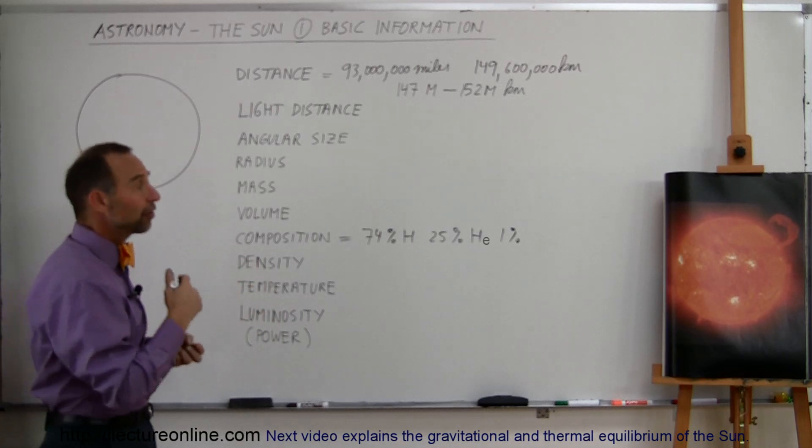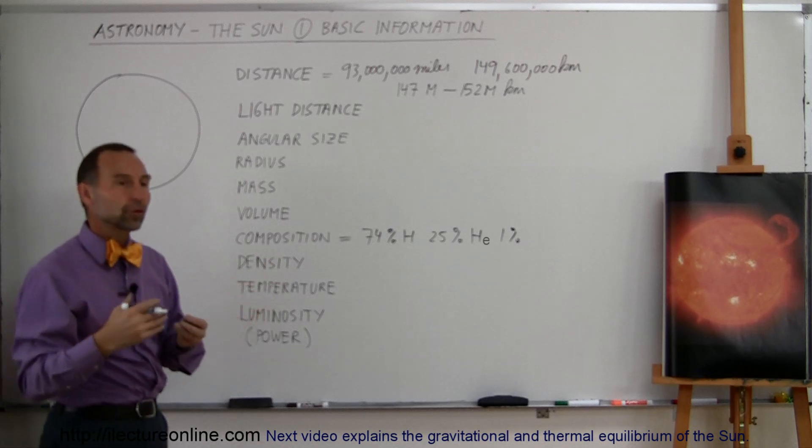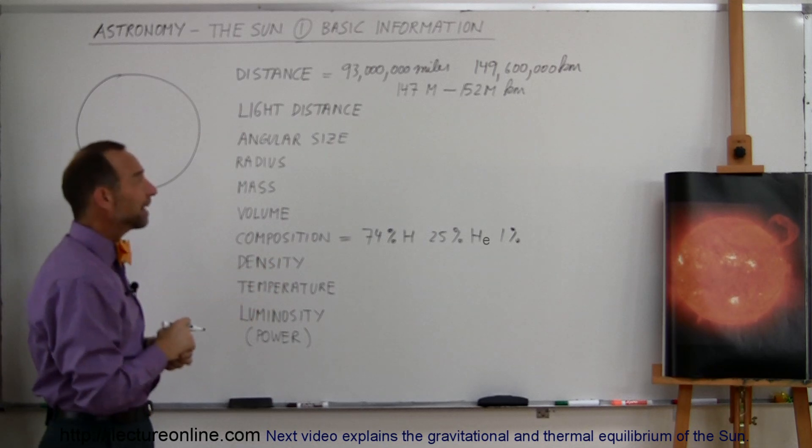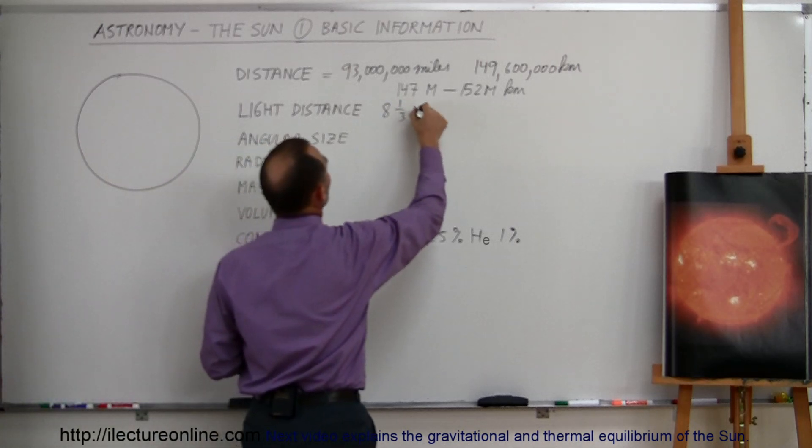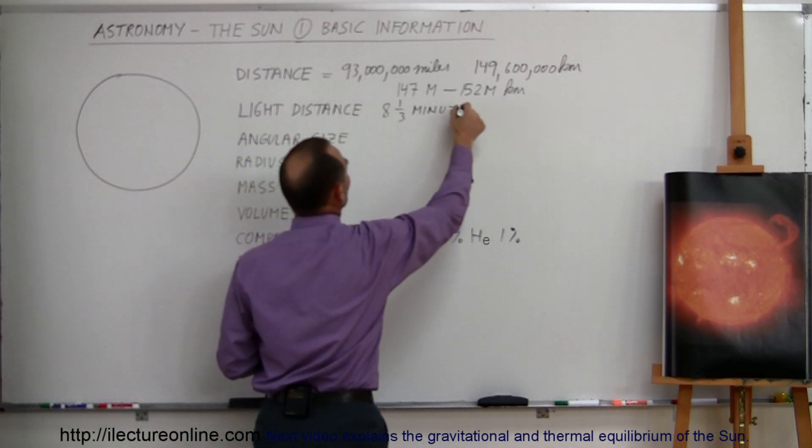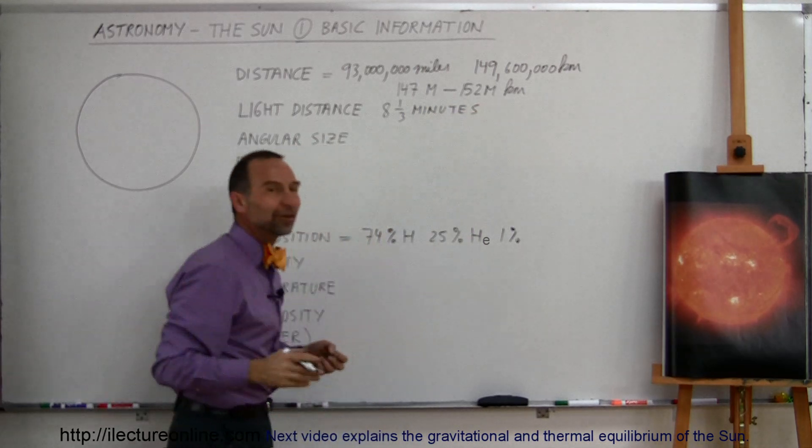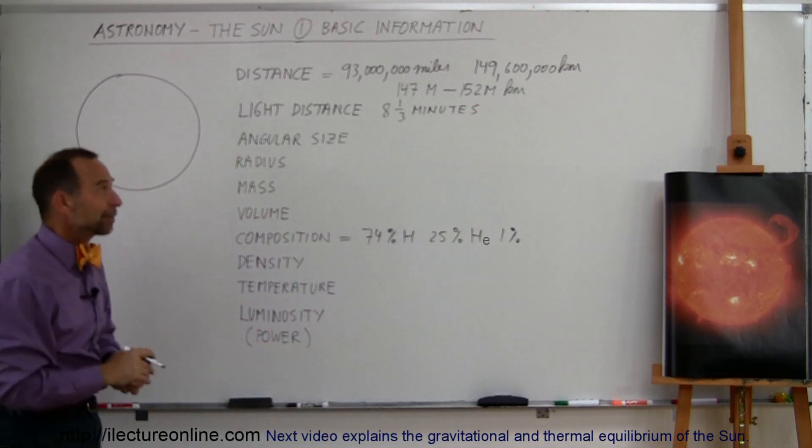Light distance-wise, how far is the Sun in light units or light travel units? Well, it takes light about 8⅓ minutes for light to travel from the Sun to us. So the distance between the Sun and us is about 8⅓ light minutes.